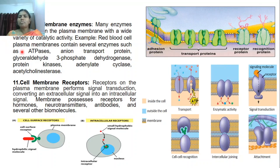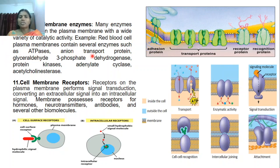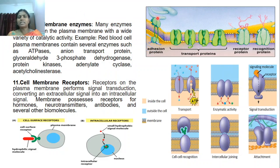The plasma membrane possesses many proteins called membrane proteins. Many enzymes are present on the plasma membrane with a wide variety of catalytic activity. For example, the red blood cell plasma membrane contains several enzymes such as ATPase, anion transport protein, glyceraldehyde-3-phosphate dehydrogenase, protein kinases, adenylyl cyclase, and acetylcholinesterase. These are all proteins and enzymes present on the membrane with specific functions.